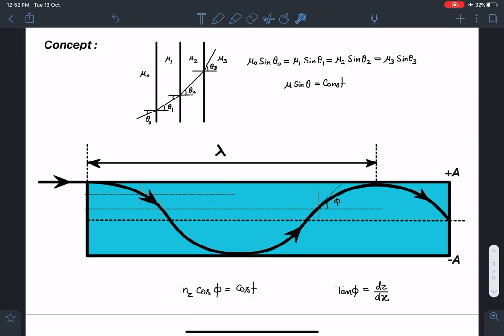So our equation mu sin theta equal to constant is going to be mu z cos phi equal to constant. Mu z is a refractive index as a function of z. So mu z cos phi is constant.